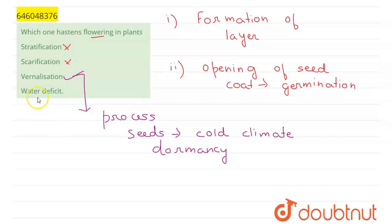If there is deficiency of water, then photosynthesis will not happen and the entire plant will die off. And as the entire plant will die off, the entire plant will be hastened and not only the flowering process. So this is also a wrong option here, because which one hastens flowering in plants? It is the vernalization.